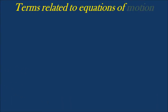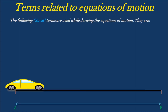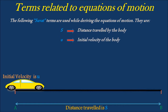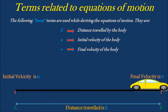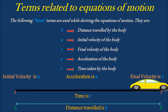Now, let's discuss about terms related to equations of motion. The following SUVAT terms are used while deriving the equations of motion: distance traveled by the body, represented by S; initial velocity of the body, represented by U; final velocity of the body, represented by V; acceleration of the body, represented by A; and time taken by the body, represented by T.